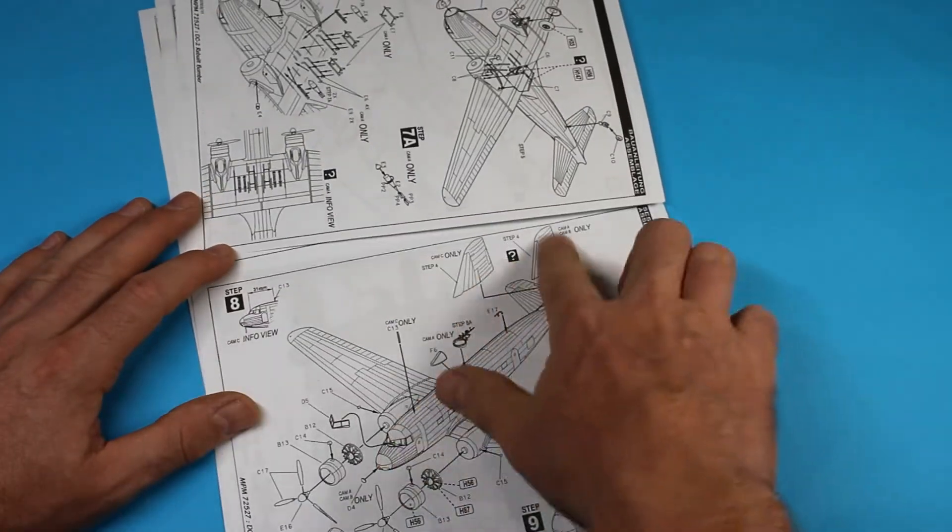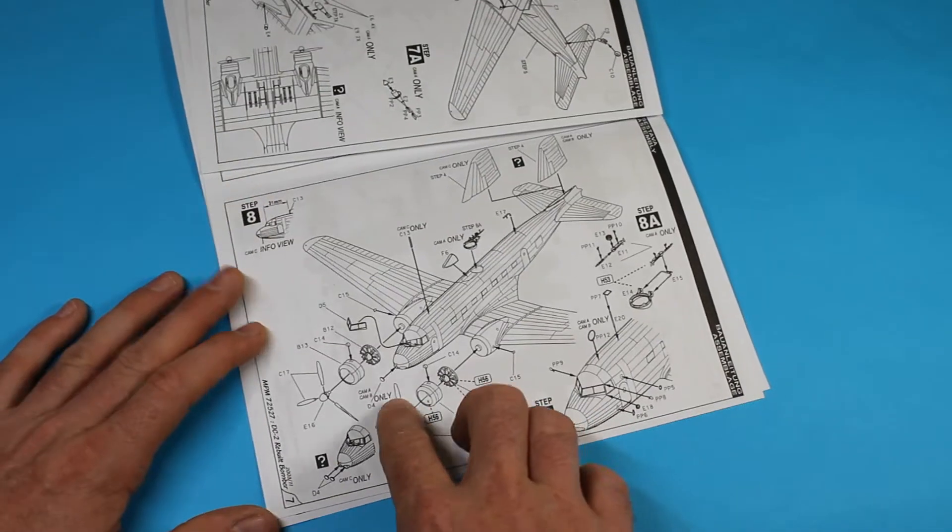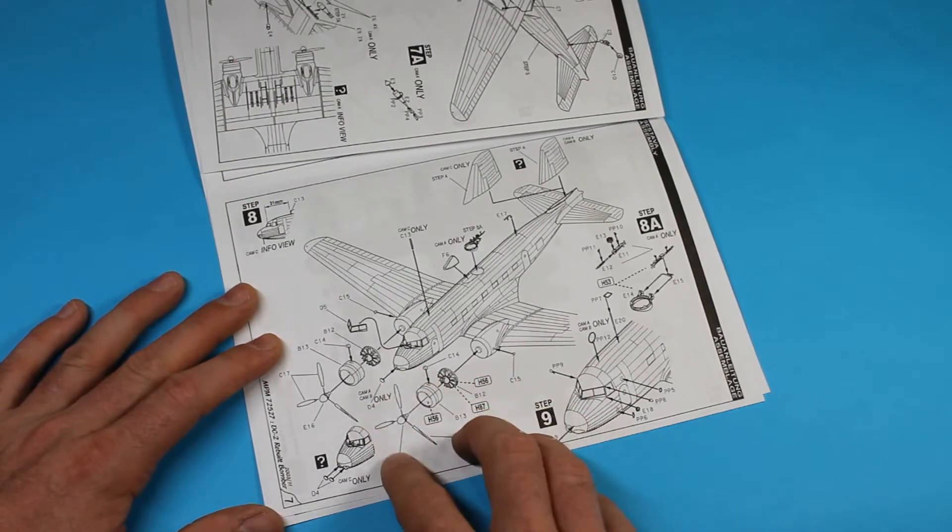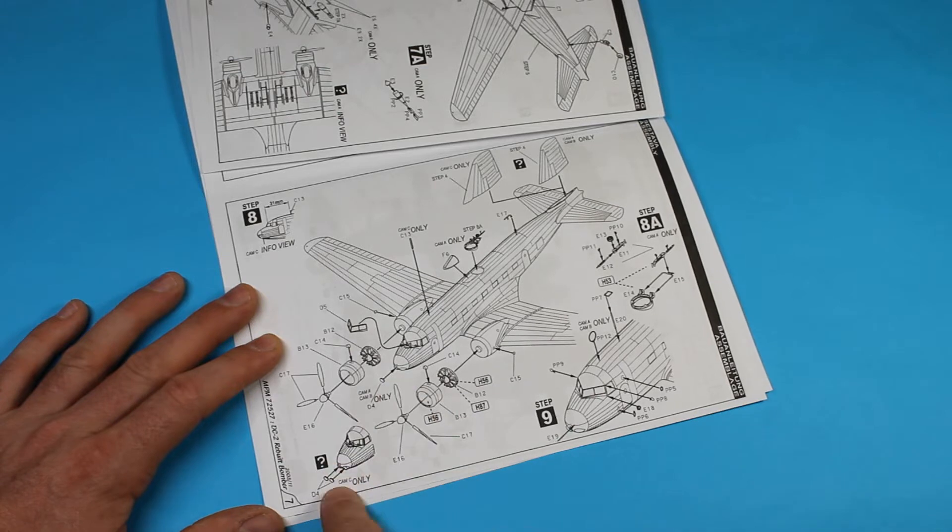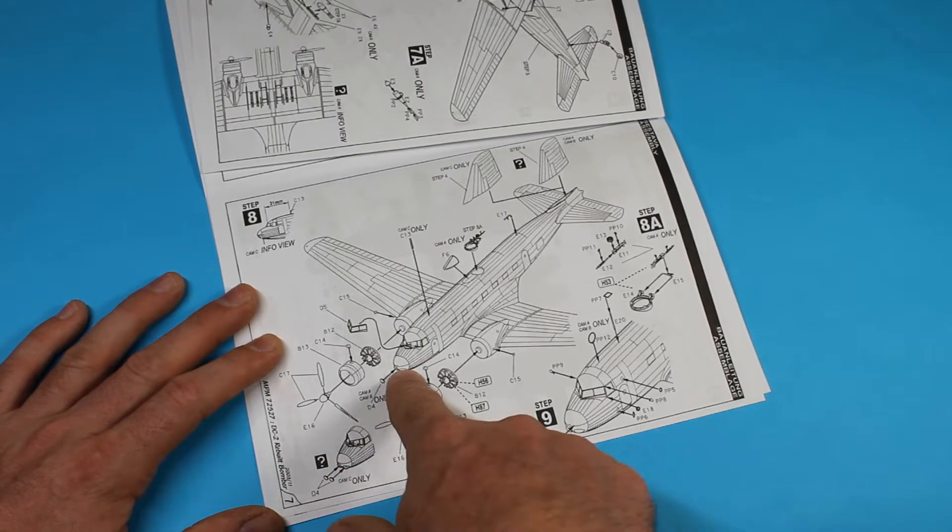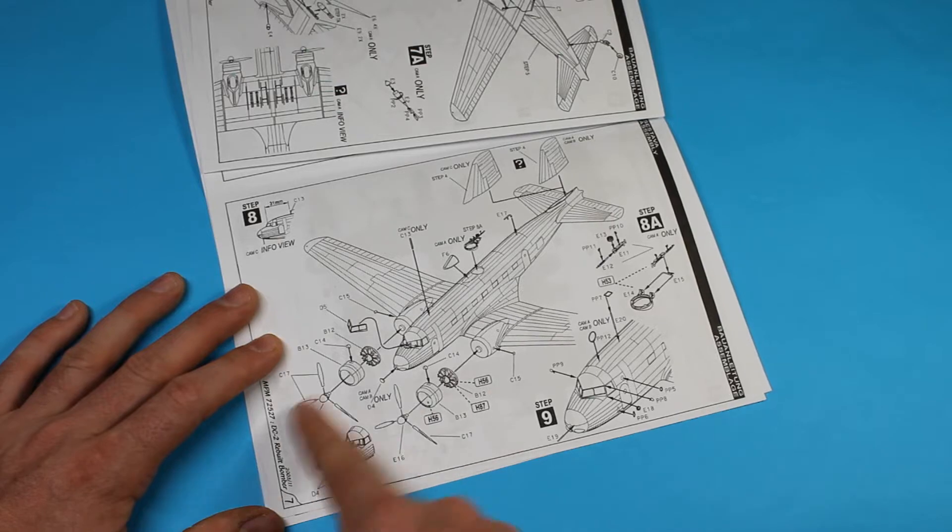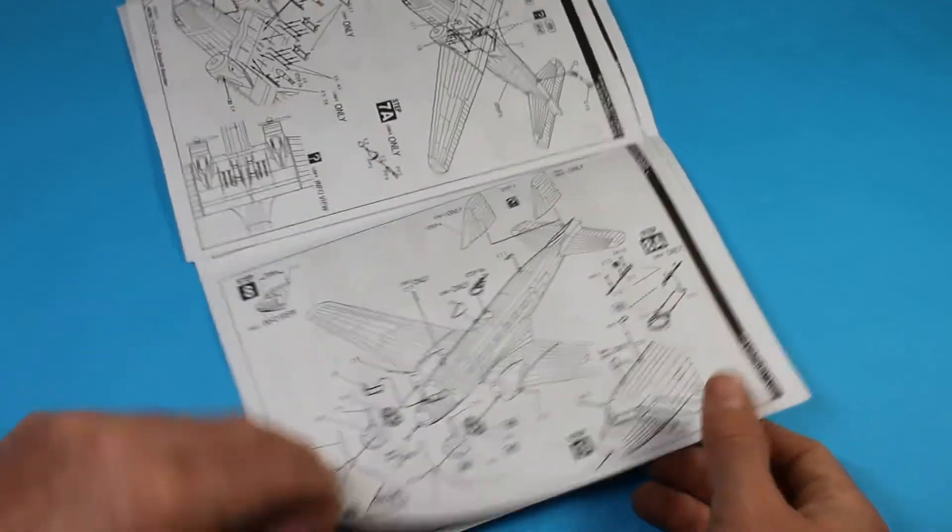You've got different tail fins and rudders here, as well as a few optional parts going on the front. Two different nose types. You've got Camouflage A and B use this, Camouflage C use that. Engines going on, a few final touches.